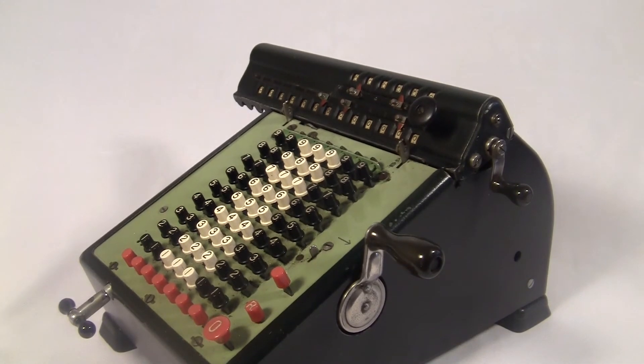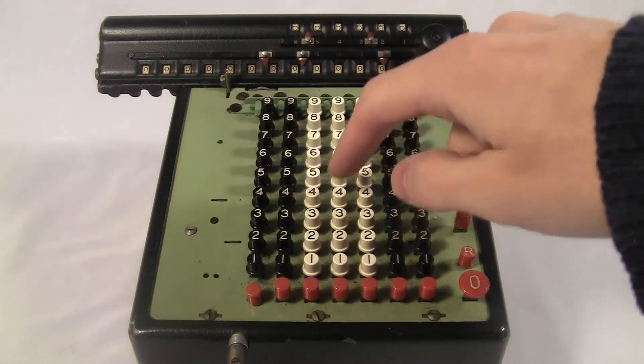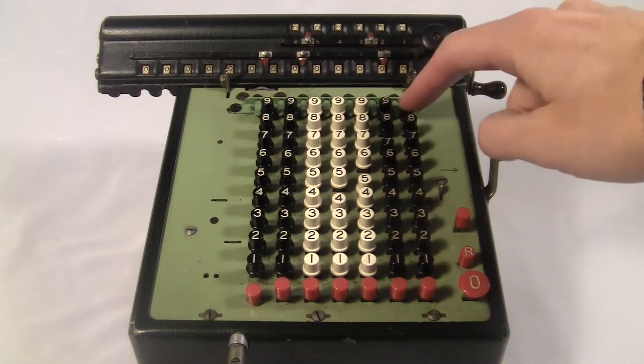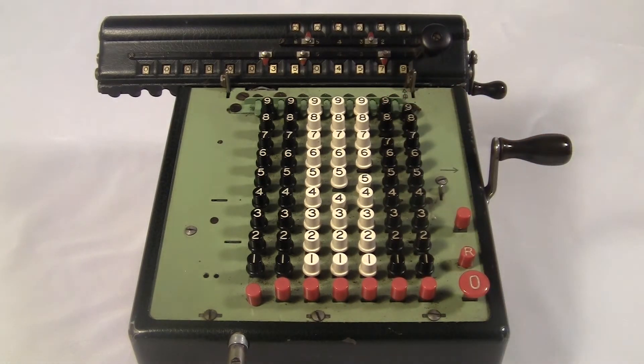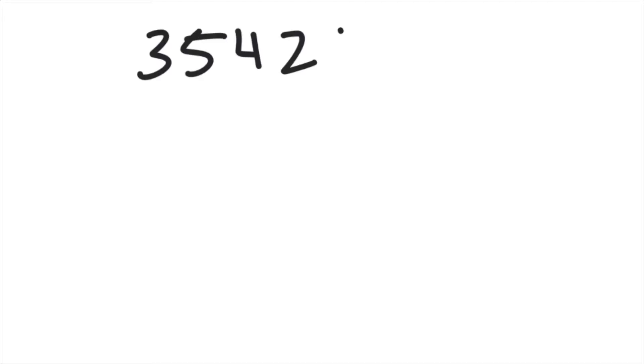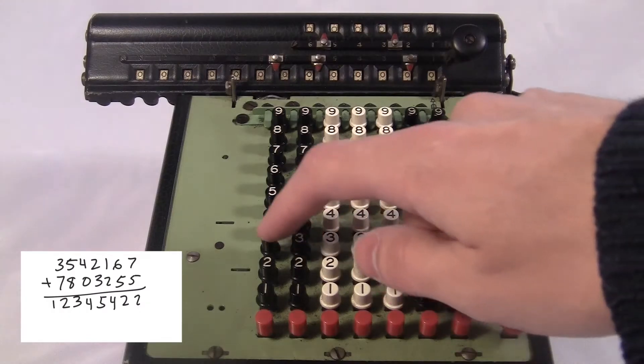Anyway, here's how it works. The basic operations are adding and subtracting. To add, you type a number in and turn the main crank forwards. This adds the number into the lower display up top. Then you just type in another number and crank it in too, and it'll add. Like this addition will look like this.